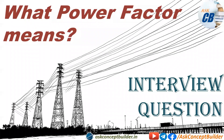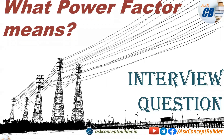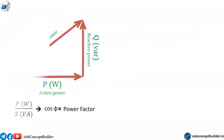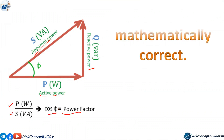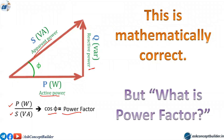Hello everyone, welcome to our channel Ask Concept Builder. I am Ravi, and in this video we learn what power factor actually means — what does power factor signify. Through the phasor diagram, we can see that if we phasor-sum the active power and the reactive power, we get the apparent power, and the active power upon the apparent power is our power factor, that is cos theta. This is mathematically correct, but the question remains: what is the power factor and what does it actually signify?